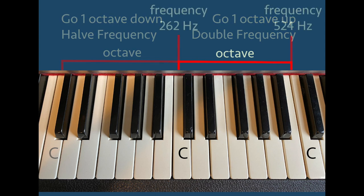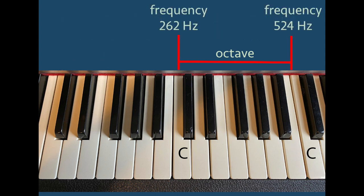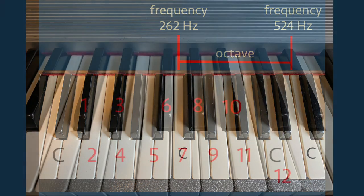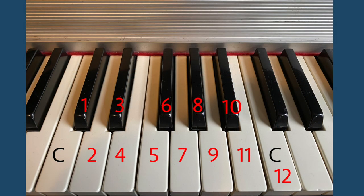So for example, middle C has a frequency of 262 Hz, and the C an octave above has frequency 524 Hz. It takes 12 notes to go up note by note from any one note to an octave above.